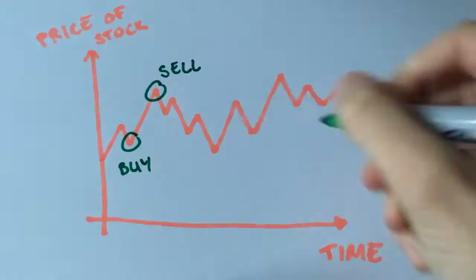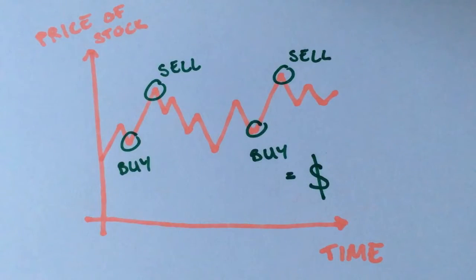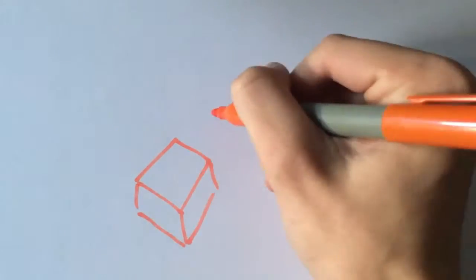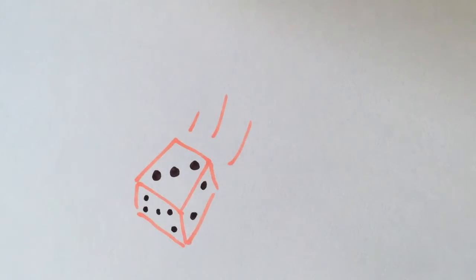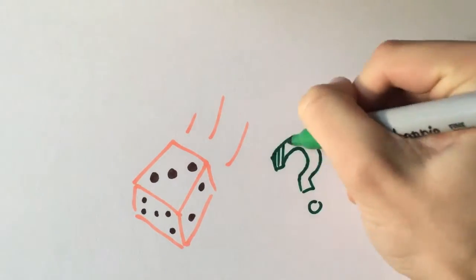Imagine if you could predict the movement of the stock market. By buying and selling stocks with perfect timing, you could become extremely rich in no time at all. The problem with this is that it's difficult to do. It's like trying to predict the outcome of rolling dice—there are just too many factors that affect the result.